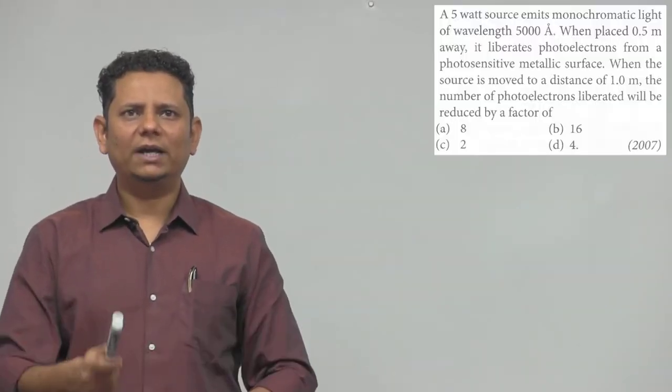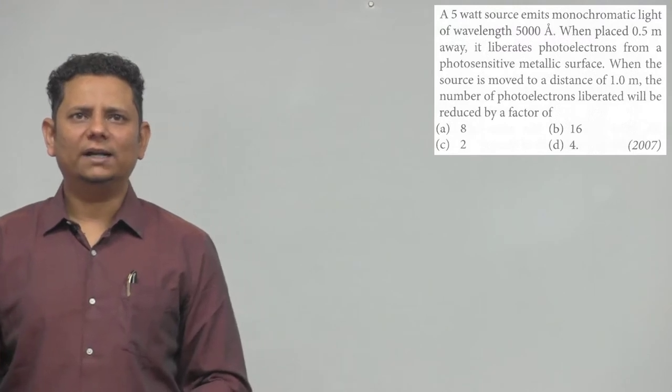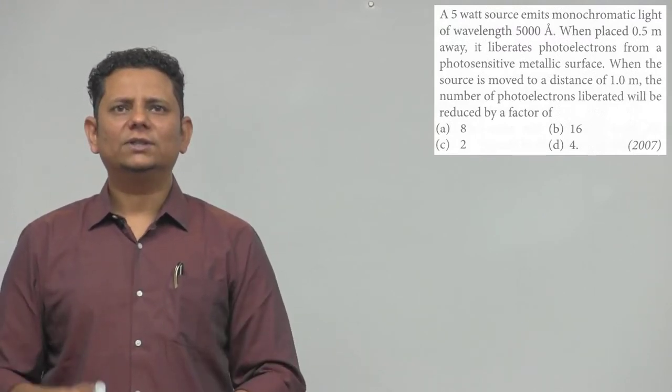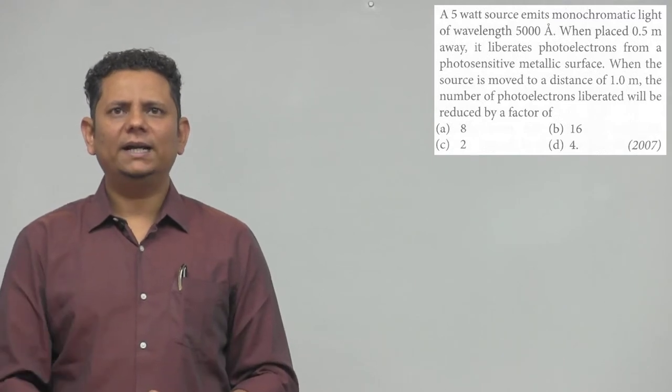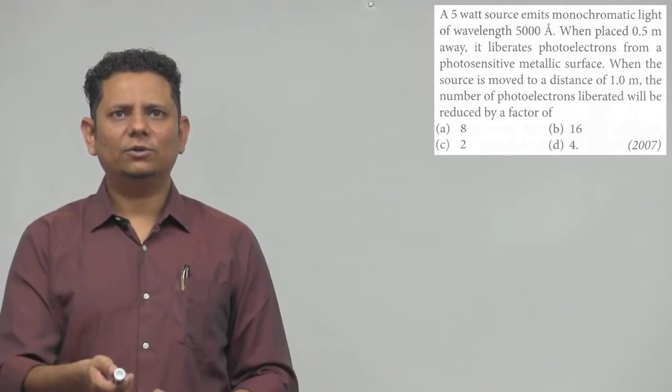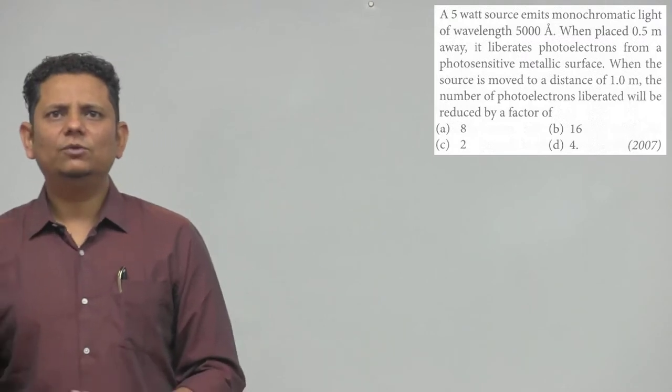Next question: A 5 watt source emits monochromatic light of wavelength 5000 angstrom. When placed 0.5 meter away, it liberates photoelectrons from a photosensitive metallic surface. When the source is moved to